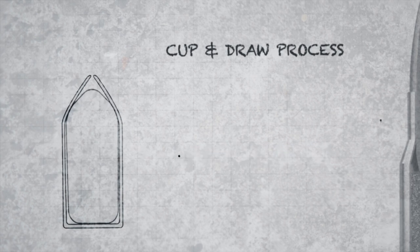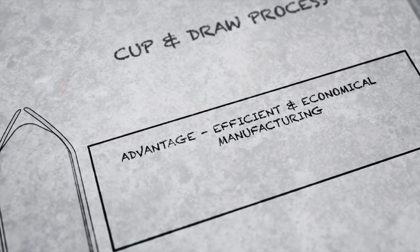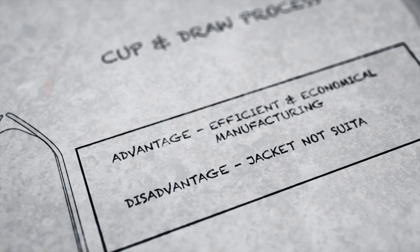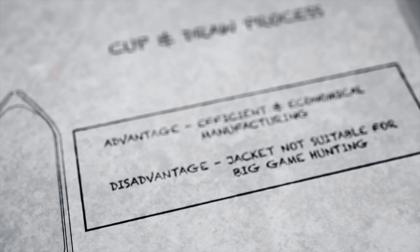You're going to have a finished bullet. The advantage of this process is very efficient, raw materials go in, finished bullets come out. The disadvantage is you can't make the jacket any thicker than the material that you start out with.